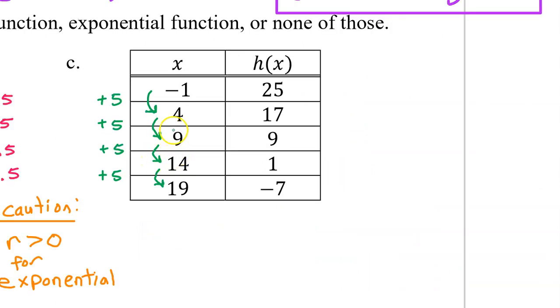For part C, we once again have equal length input value intervals. So, let's move on to the output values. We immediately see a common difference of negative 8. Since the first differences are constant, h(x) is linear.